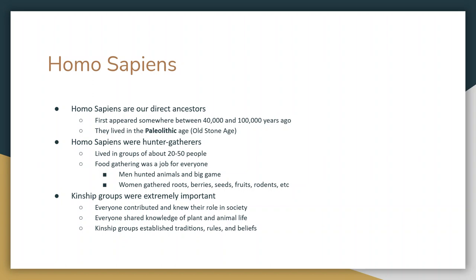Another big part of these Homo sapiens hunter-gathering groups is the kinship groups, and the kinships are really important because they gave everybody a role. Everybody knew what their position was in the group, everybody knew how to contribute and what they needed to contribute, and they shared knowledge. For some people today, if you were to go out in the woods and ask what you should eat and what you can't eat, we wouldn't really know because we go to the grocery store. These kinship groups, however, knew exactly which plants to eat, which plants to use for medicine, and which animal life was the easiest to get with the least caloric deficit.